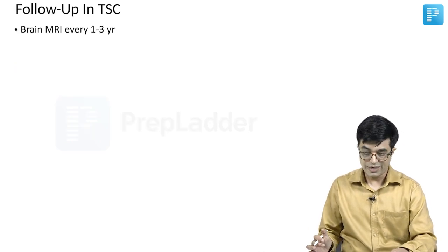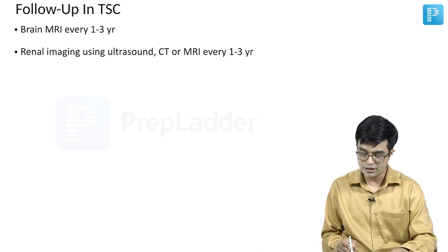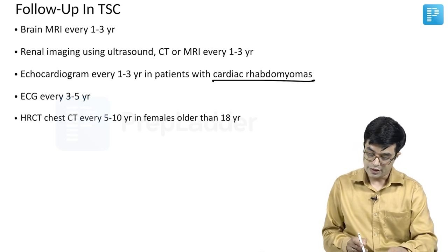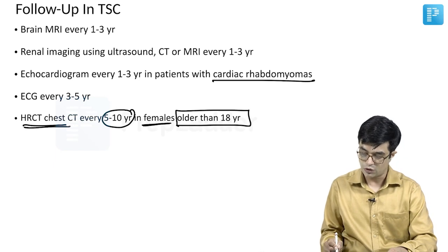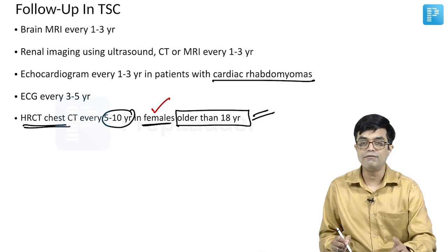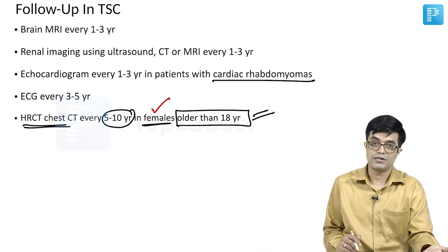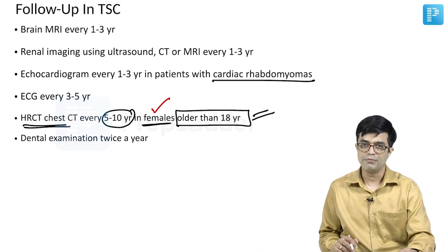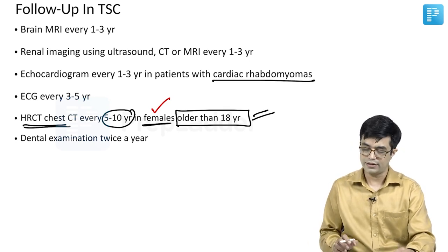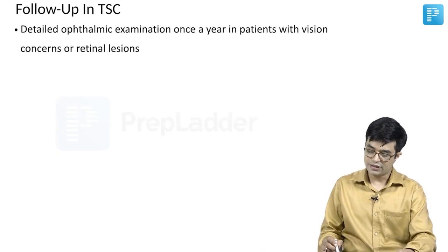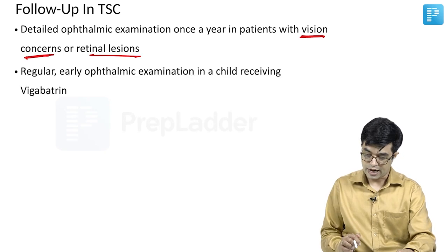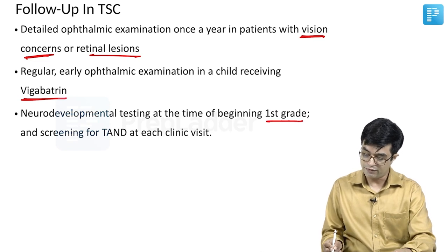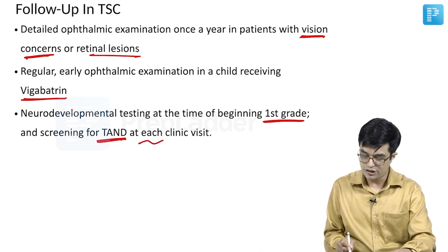Follow-up for tuberous sclerosis includes: brain MRI every 1 to 3 years; renal imaging (ultrasound, CT, or MRI) every 1 to 3 years; echocardiogram every 1 to 3 years for patients with cardiac rhabdomyomas; ECG every 3 to 5 years; HRCT chest every 5 to 10 years in females older than 18 years (since only females develop pulmonary lymphangioleiomyomatosis); dental examination twice a year; skin examination once a year; ophthalmic examination once a year for patients with vision concerns or retinal lesions; and neurodevelopmental testing at the beginning of first grade. Screening for TAND should be done at each clinical visit.